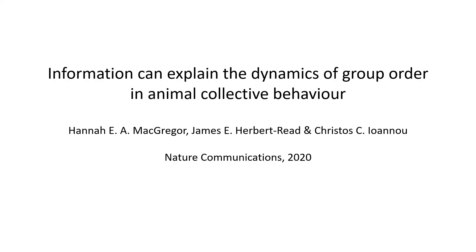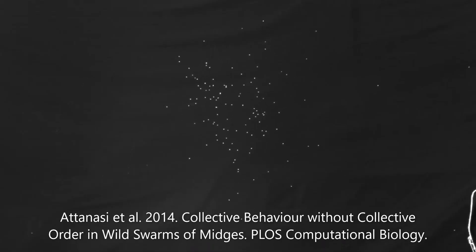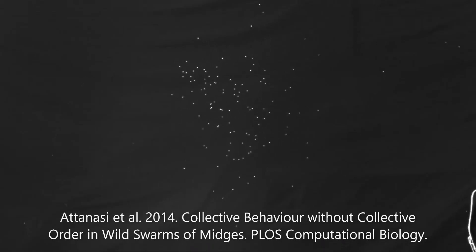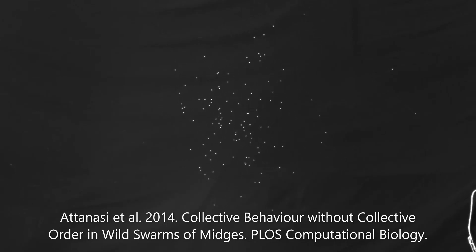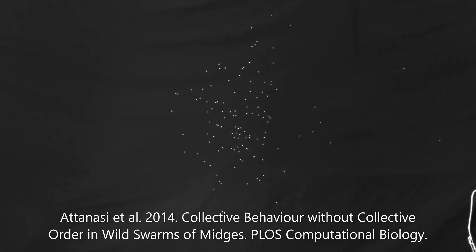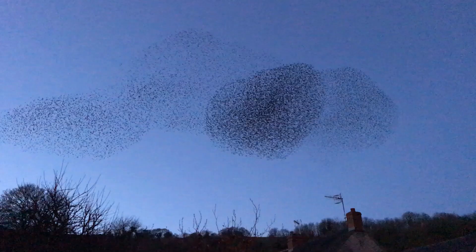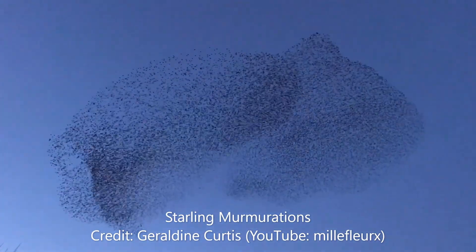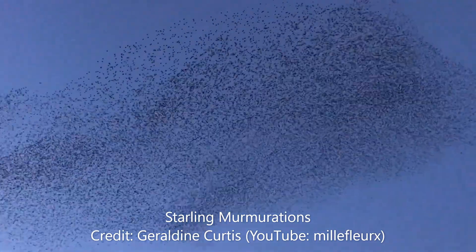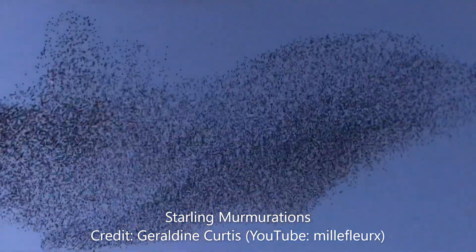Animal groups vary in their collective order or state, from disordered swarms to highly polarised groups. This swarm of midges is an example of extreme group disorder, where individuals are highly unsynchronised in their direction of movement. By contrast, these starling murmurations are an example of collective order, with individuals in the group synchronising their movements.